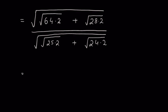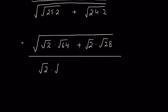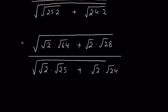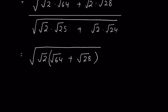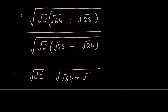Now we can take square root of 2 common and write: square root of 2 times square root of 64, plus square root of 2 times square root of 28, upon square root of 2 times square root of 25, plus square root of 2 times square root of 24.